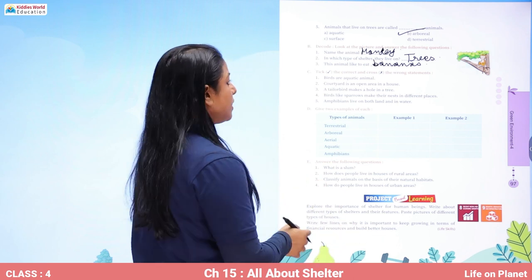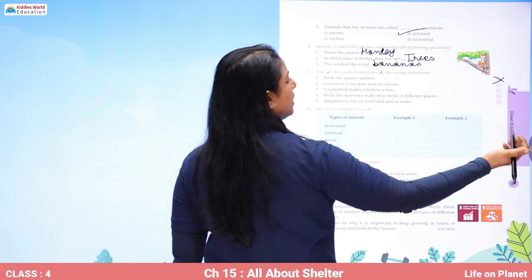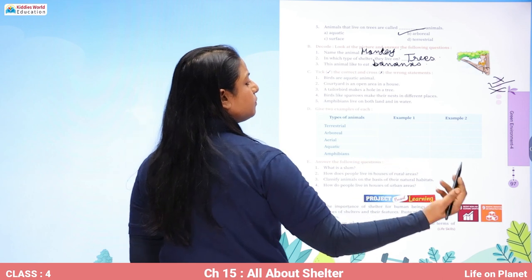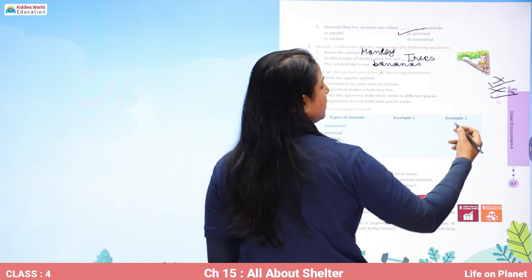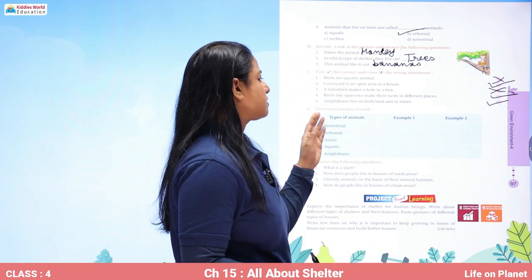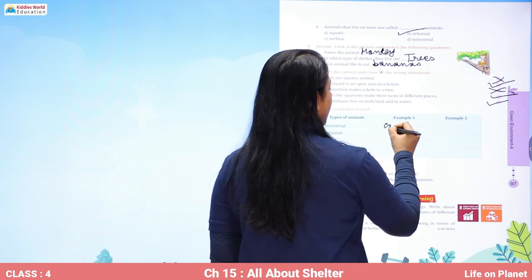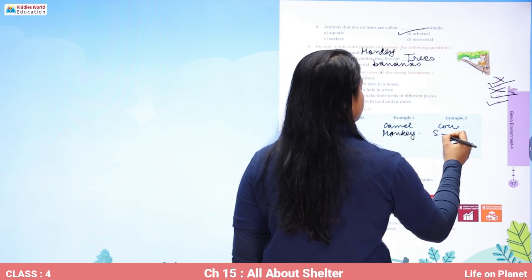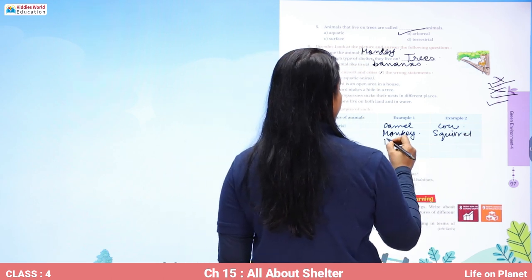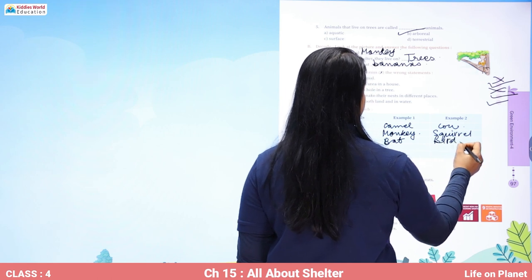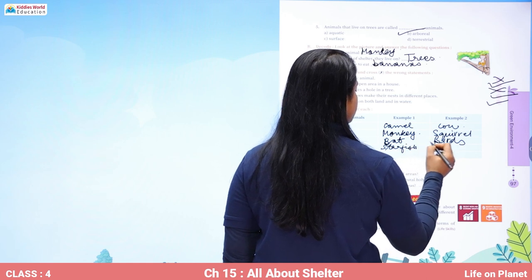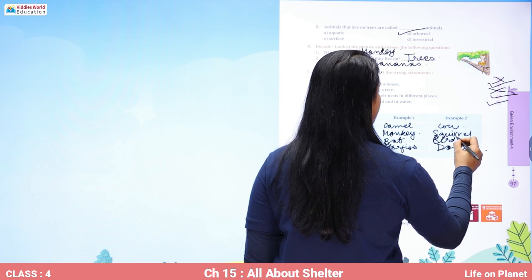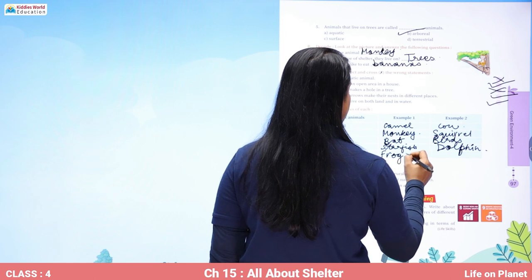Tick the correct and cross the wrong options. Birds are aquatic animals — false. Courtyard is an open area in a house — correct. A tailor bird makes a hole in a tree — false. Birds like sparrows make their nests in different places — correct. Amphibians live on both land and in water — correct. Give two examples of each: terrestrial animals — camel and cow; arboreal animals — monkey and squirrel; aerial animals — bat and birds; aquatic animals — starfish and dolphin; amphibians — frog and salamander.